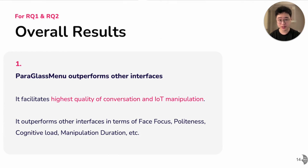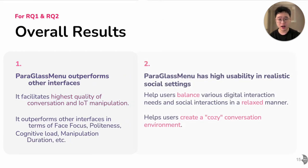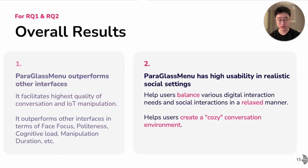With these two studies, we found that Paragraphs Menu outperforms other interfaces by facilitating the highest quality of conversation and IoT manipulation. Paragraphs Menu also shows high usability in real social settings — it not only helps users balance digital interaction needs with social interaction needs in a relaxed manner, but also helps users create a comfortable environment for conversation.